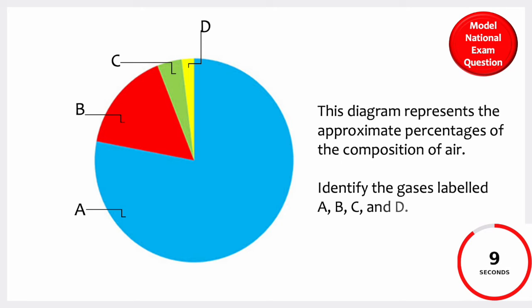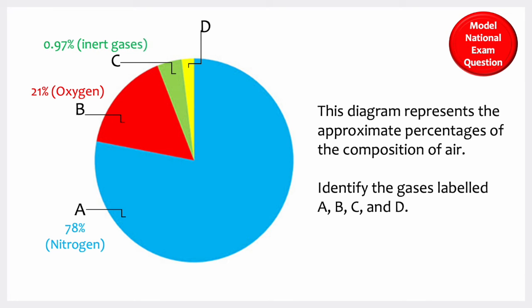A is nitrogen, about 78 percent. B is oxygen, about 21 percent. C is inert or rare gases, about 0.97 percent. And D is carbon dioxide, about 0.03 percent.